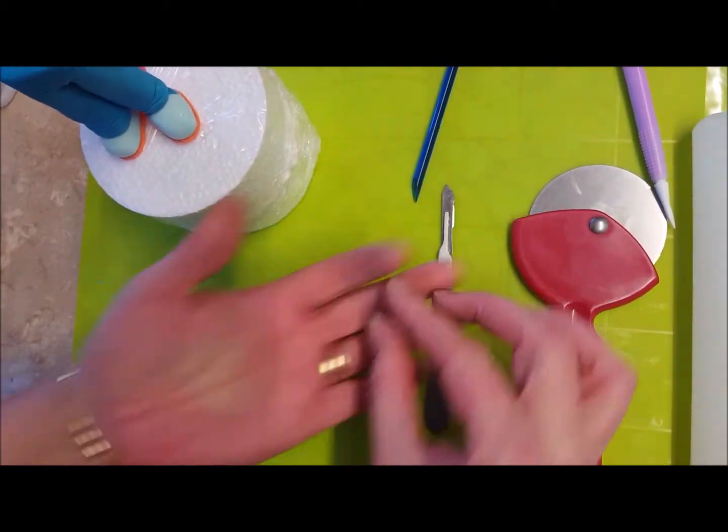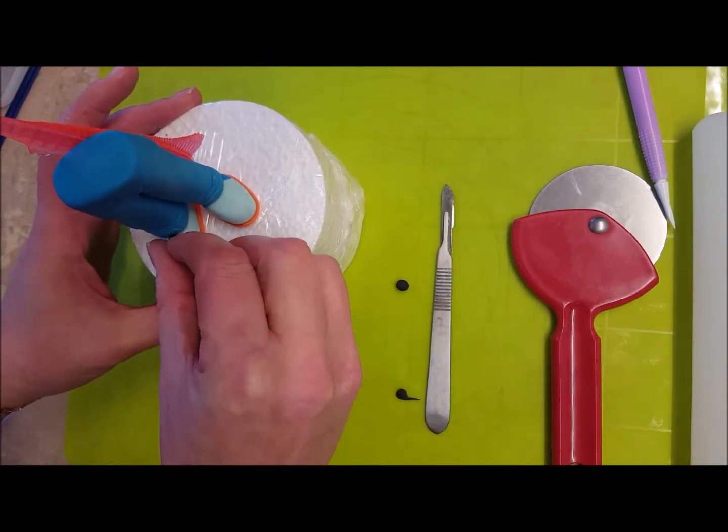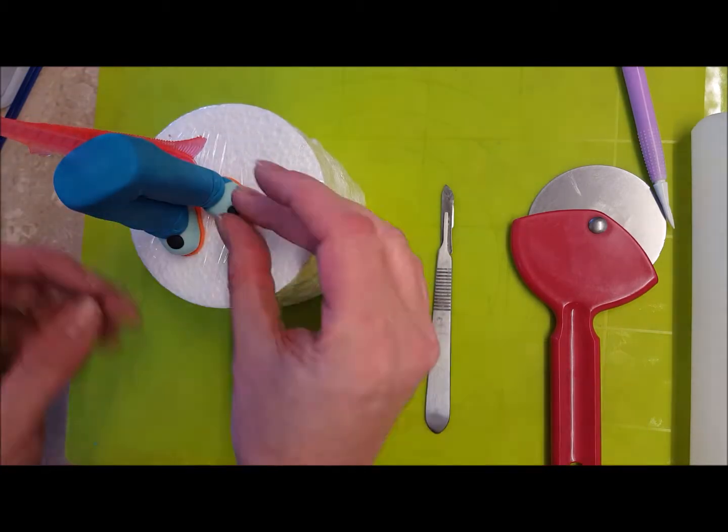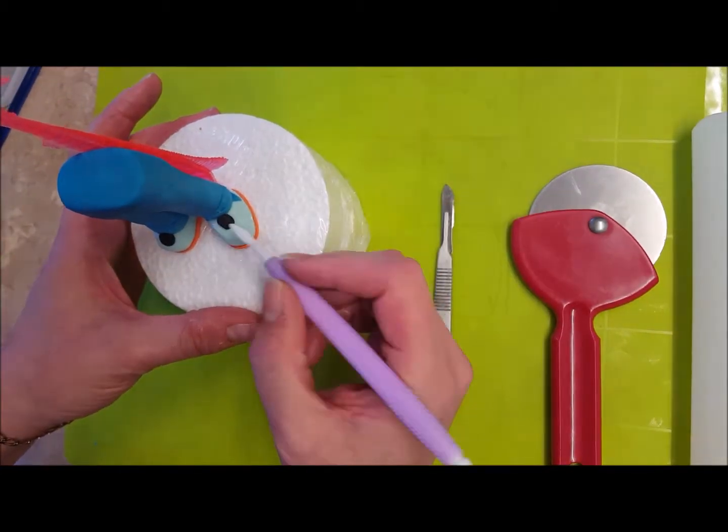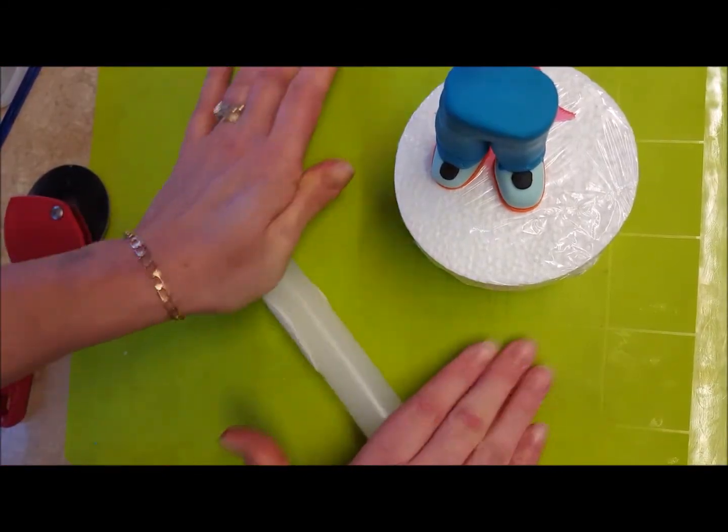And then get a little tiny ball of black and put that just where the jeans end and your shoes start. Flatten it out slightly. This gives the illusion of where the laces are going to go.